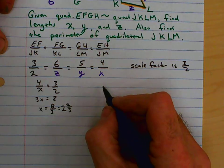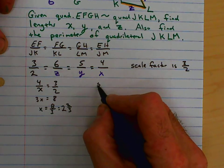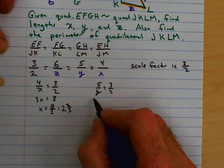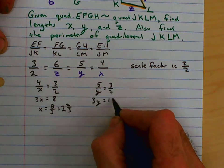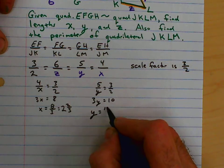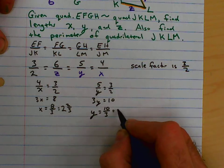For finding y, we're going to set 5 over y equals 3 over 2, is 3y equals 10. So y is going to equal 10 thirds, or 3 and a third.